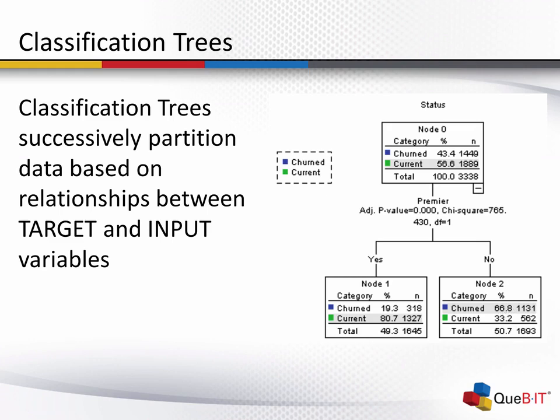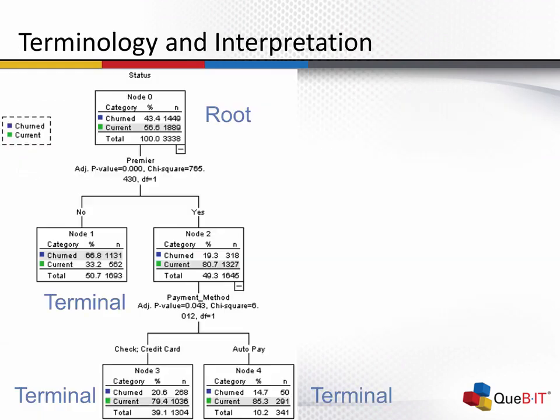So let's talk about these classification tree models a little bit more. Just some of the terminology. Up at the top of the tree, we have what's called the root. The root is just showing you the distribution of your outcome field. Then the data has been split up based on which predictors are the most important or most related to the outcome field.